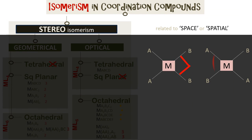Stereoisomerism is isomerism in spatial arrangement. For example, these two ligands are at 90 degrees to each other in one molecule, whereas B and B are at 180 degrees in another. Such compounds have the same chemical formula and the same chemical properties but have different physical properties like boiling point or freezing point.